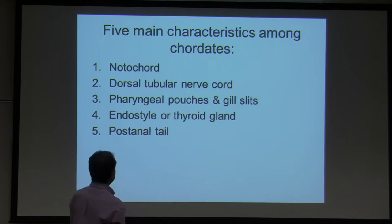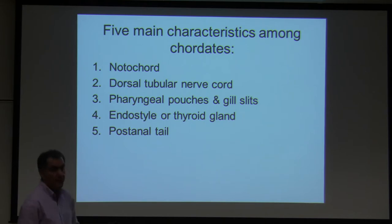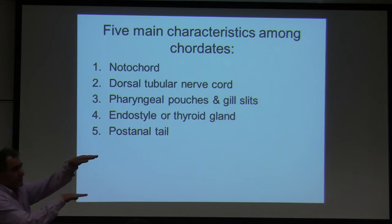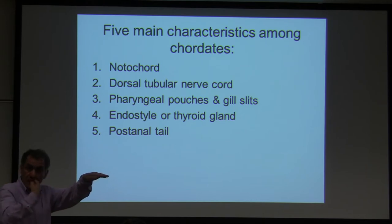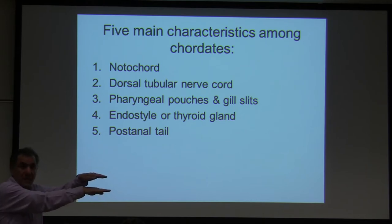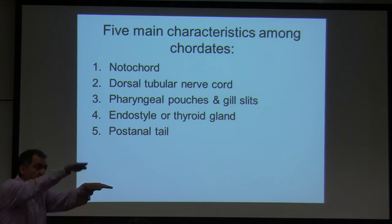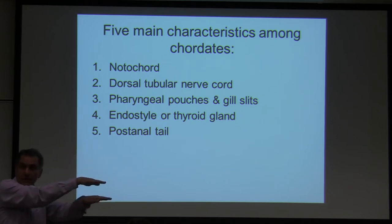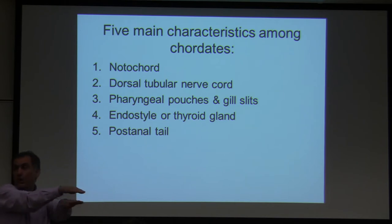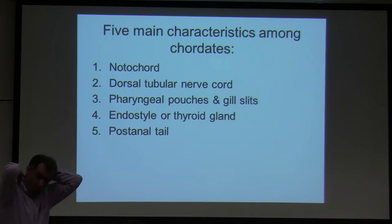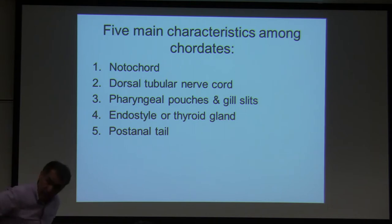The next characteristic is the dorsal tubular nerve cord. All of the animals we studied so far had their nerve cord on the ventral portion of the animal, relative to the digestive system. These animals evolved so that the nerve cord is on top of the digestive tract — that is what is called a dorsal nerve cord. Your spinal cord is in the back, not in front of you, relative to your digestive tract.